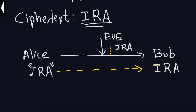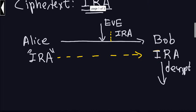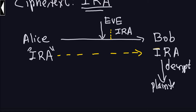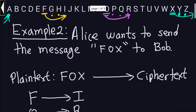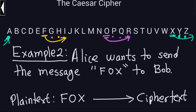Bob, similarly to the previous example, takes the received message and transforms it back into plaintext. He decrypts by going back three units to the left, and the result is the plaintext 'Fox.' I won't redo that step since it's exactly the same process — the only reason I went over this example was because of X wrapping past the end of the alphabet.